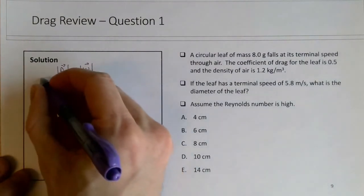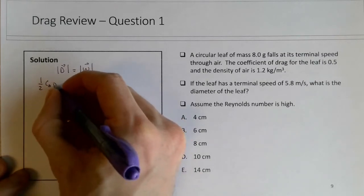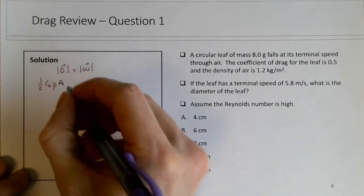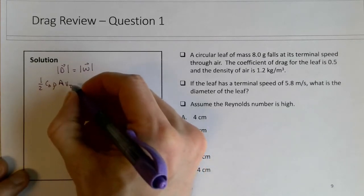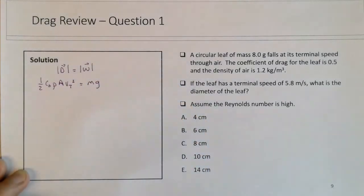We can write the drag force is 1/2 cd, the drag coefficient, times the density of the air times the cross-sectional area of the leaf times its terminal speed squared, equals the weight, which is mg. Here we're trying to solve for the diameter of the leaf, and it's a circular leaf.